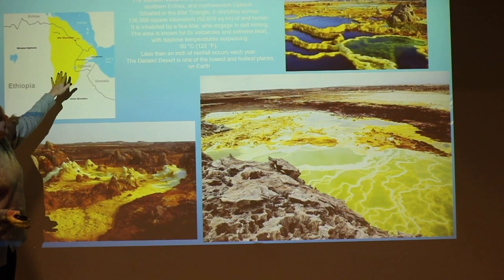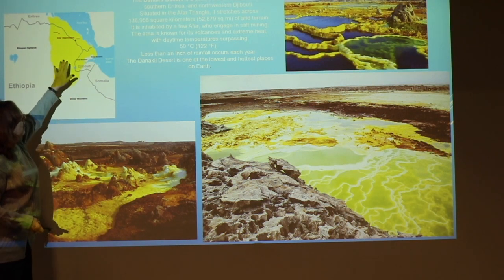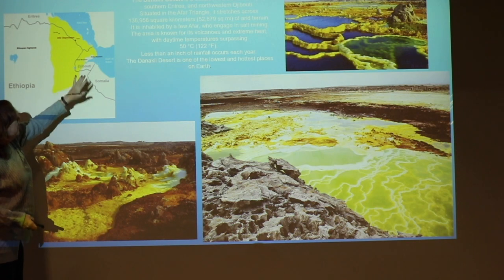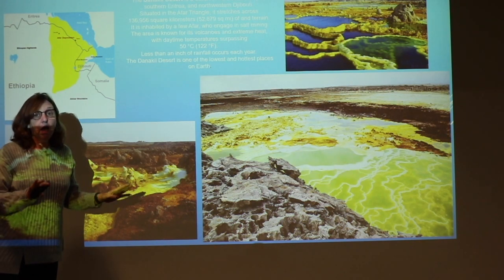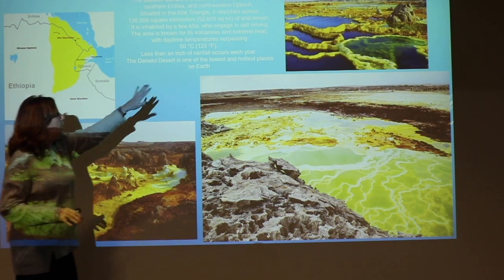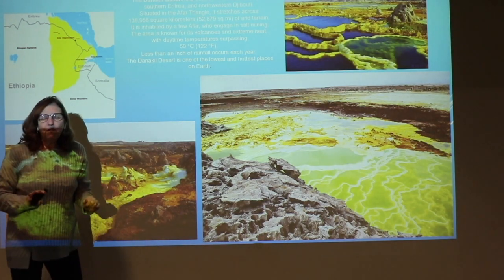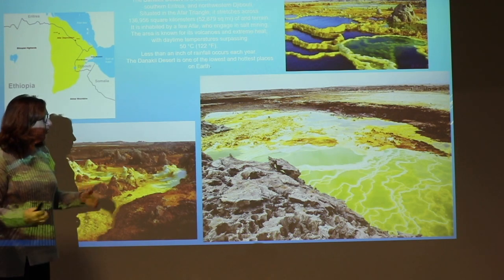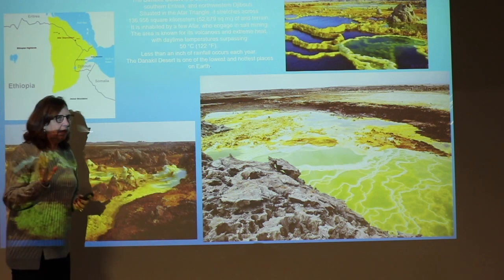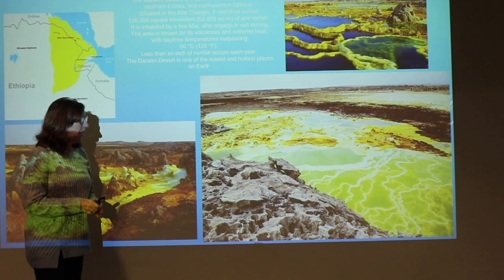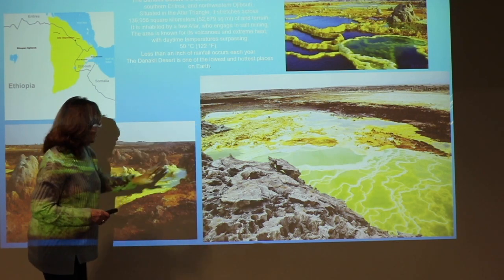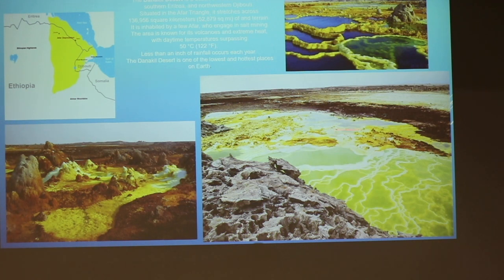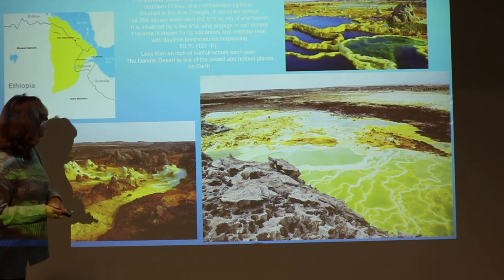There is the Danakil Desert in the northeast area of Ethiopia. It also touches Eritrea and Djibouti. It's one of the hottest places on the planet — it averages 122 degrees Fahrenheit, which is 50 degrees Celsius, and has less than one inch of rainfall all year. These areas have fault lines — and where there are fault lines, there's lots of volcanic and underground activity. You can see from these pictures what it would look like if you were to visit the Danakil Desert — known for its volcanoes and extreme heat.